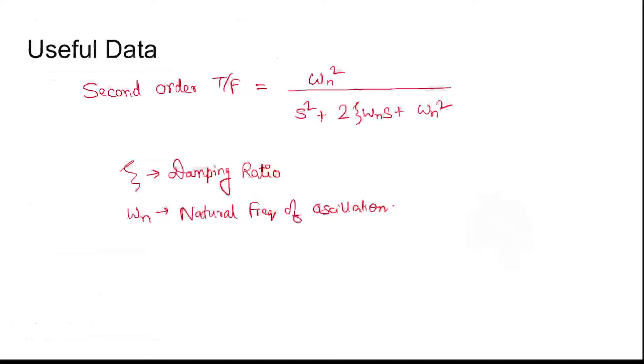For useful data, you need to know that the second order transfer function has a general form of omega n square divided by s square plus 2 zeta omega n s plus omega n square, where omega n denotes the natural frequency of oscillation and zeta denotes the damping ratio.